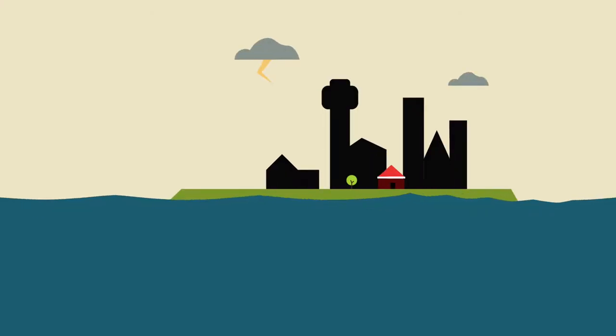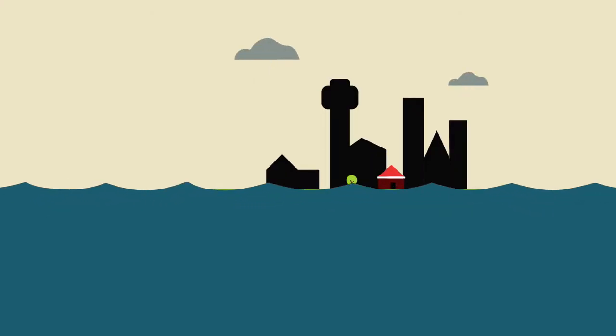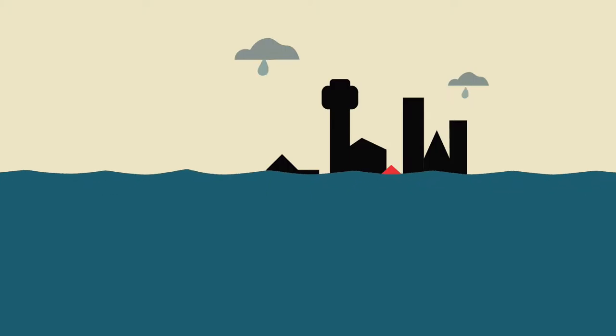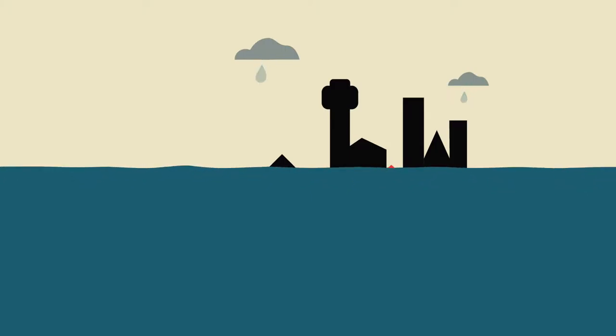What is a flood? A flood is a general and temporary condition where two or more acres of normally dry land are inundated by water or mud flow. Floods are the most common natural disaster and the leading cause of natural disaster fatalities worldwide. There are several ways flooding happens.